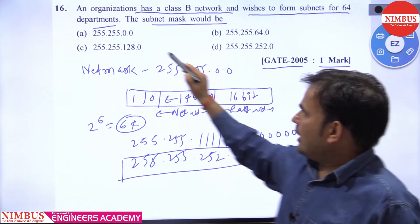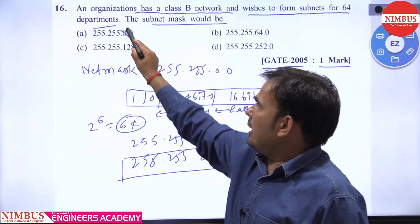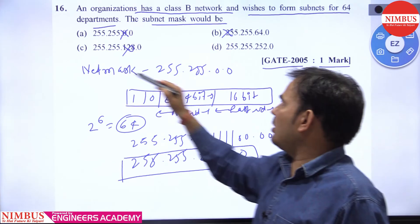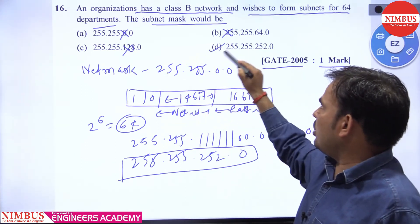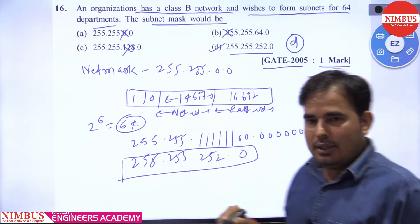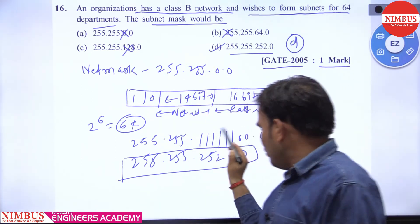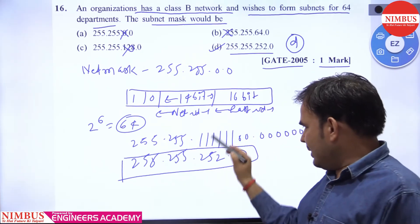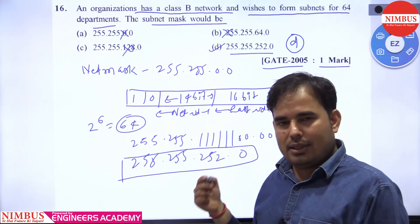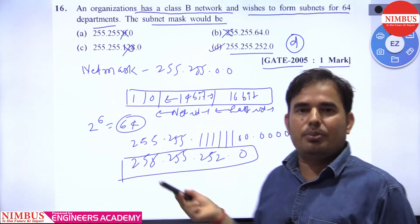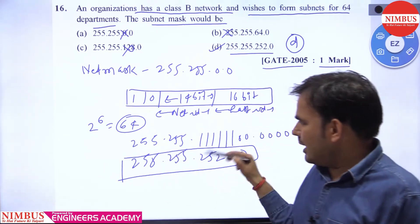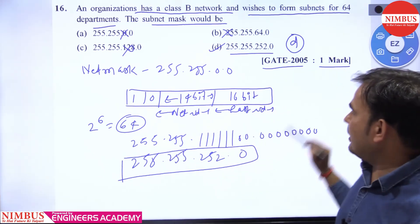So which option is correct? The first option is not correct, the second is also not correct, the third is also not correct. So option D is correct. This is because we can borrow subnet bits from the host bits — that's why option D is correct.